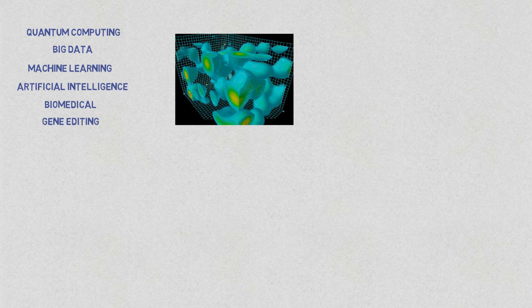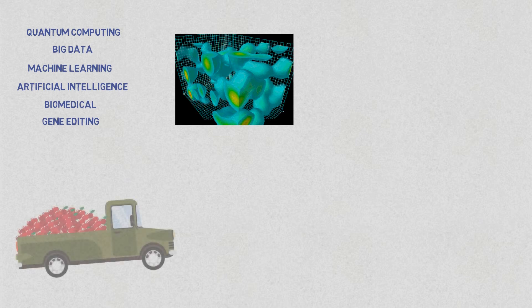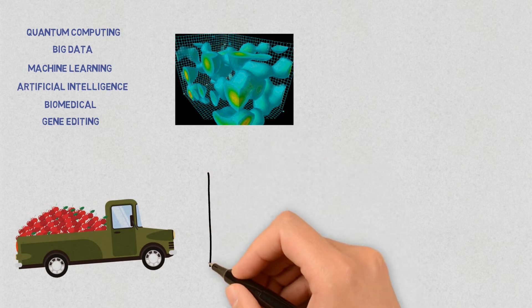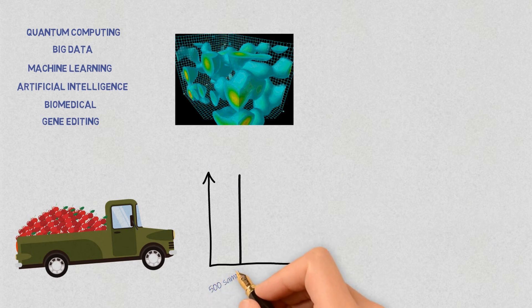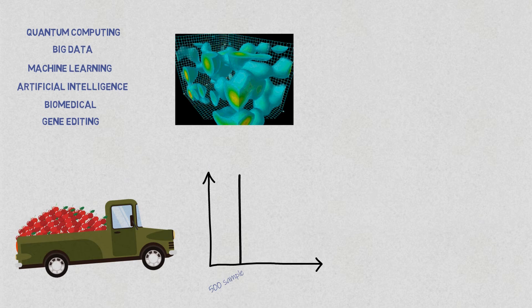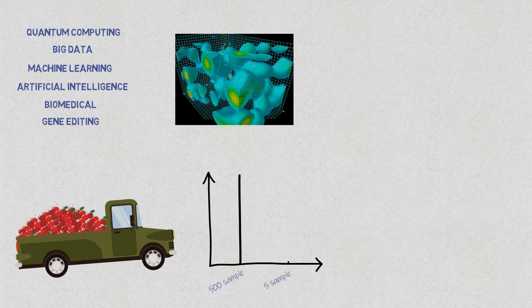Say you want to know the ratio of big to small apples in your orchard. You hire someone to randomly pick 500 apples, and among them there are 418 big apples and 82 small apples — a ratio of about one-fifth small. But what if you only picked 5 apples and all happened to be big? Can you conclude that all apples in your orchard are big? I'm afraid the answer is no.